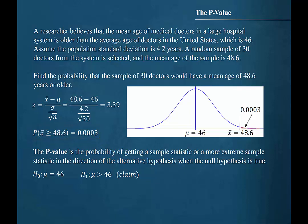So the probability of getting this sample statistic or a more extreme sample statistic in the direction of the alternative hypothesis, assuming the null hypothesis is true, would be 0.0003. Therefore, the p-value would be 0.0003.